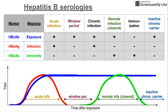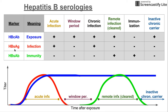The three markers we're going to be talking about are: the core antibody for hepatitis B, HBcAb, shown in blue; the surface antigen in red, HBsAg; and the surface antibody in green, HBsAb.